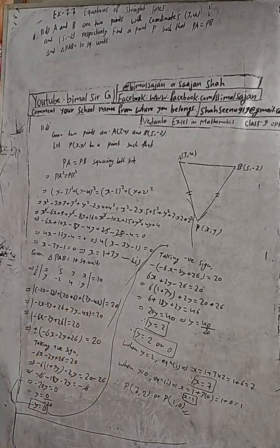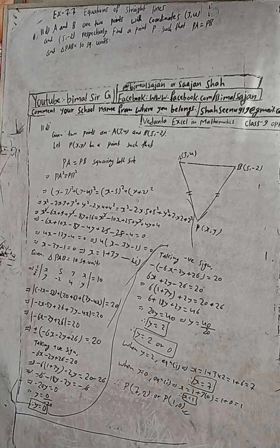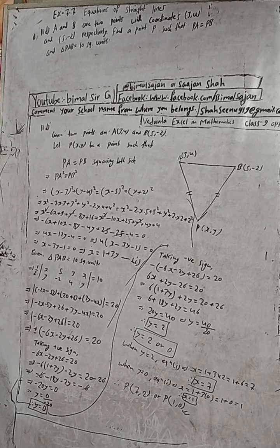This is the exact solution. The answer is correct because we have two modulus values — two types. This is the exact solution, so we have two parts: part A and part B. We have to create the video.